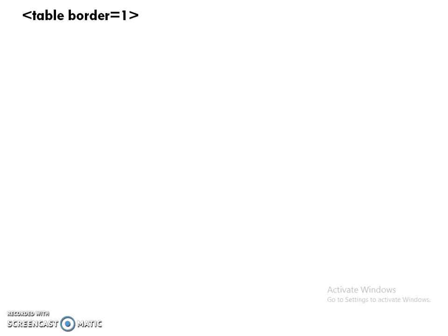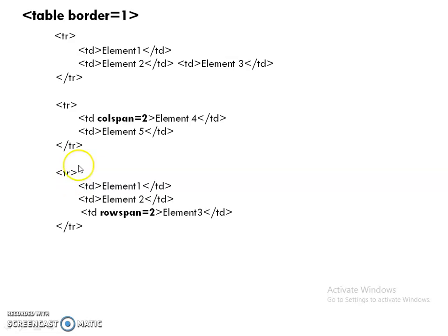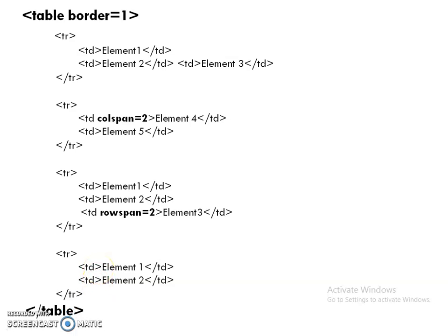One more example. Here I am specifying the table border. In the first row, I am creating three values: element one, element two, and element three. For the second row, I am using one special attribute called colspan. The value of colspan is two, meaning we are merging two columns, and passing the value element four. The next value is element five. In the third row, I am using another special attribute, rowspan, with a value of two, meaning we are merging two rows. I then complete the table tag.